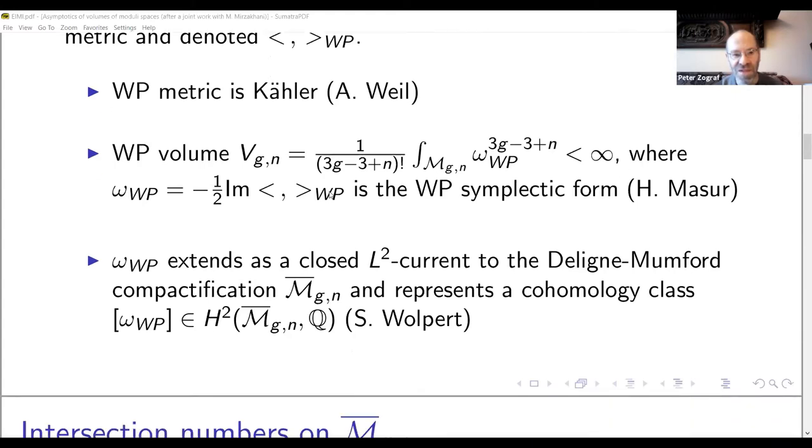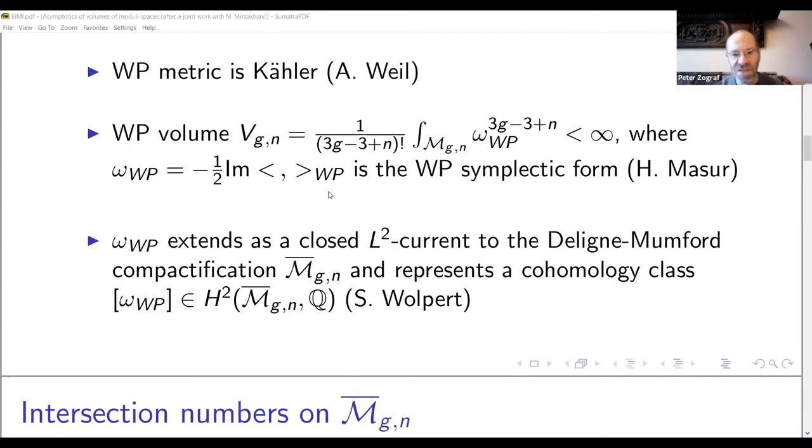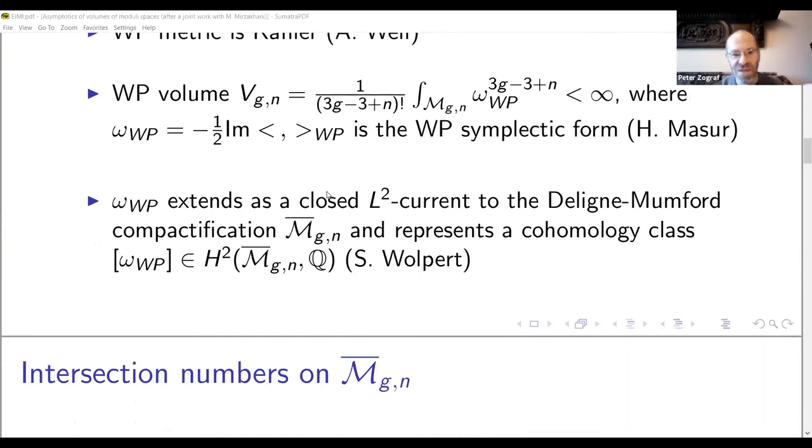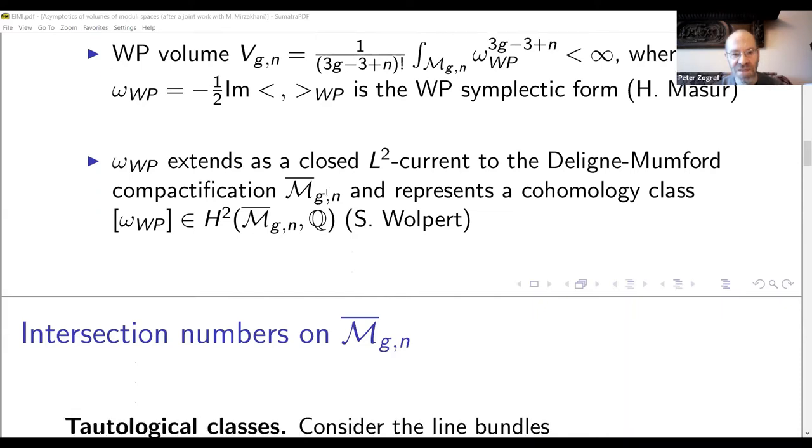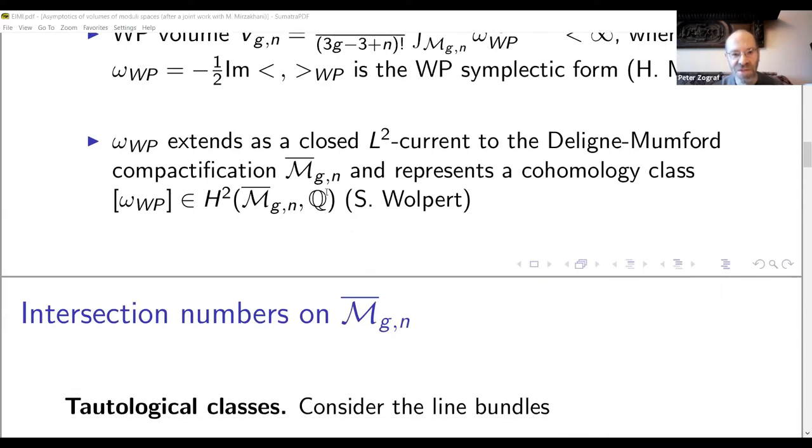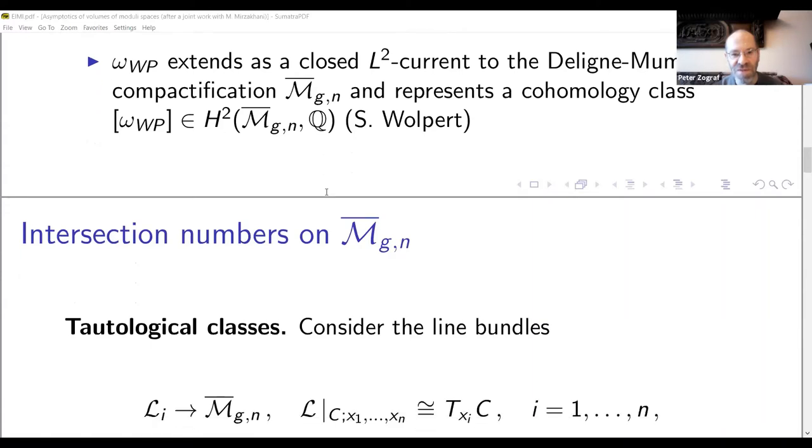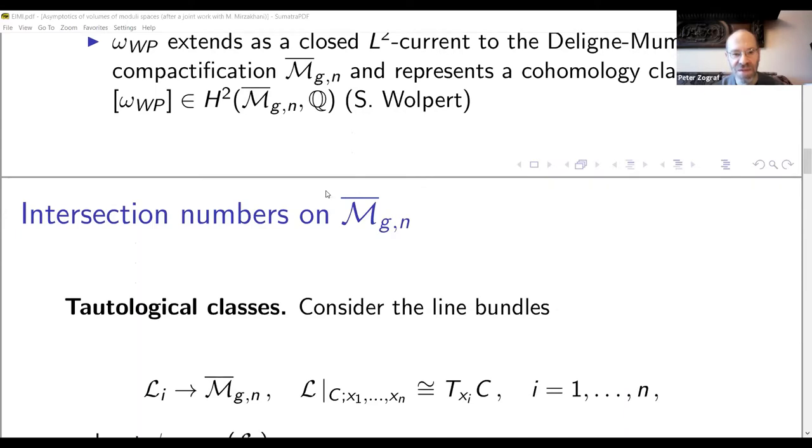And the Weil-Petersson Kähler form extends as a closed L^2 current to the Deligne-Mumford compactification of the modular space M_{g,n}. And it represents some cohomology class that we denote by omega_WP in square brackets. We choose the normalization of the Hodge scalar product in such a way that the class of Weil-Petersson form is a rational number. It's not an integer because M_{g,n} bar is an orbifold. So, we can try to compute volumes using cohomology of compactified modular space. So, now I'll tell a few words about intersection theory on M_{g,n} bar.